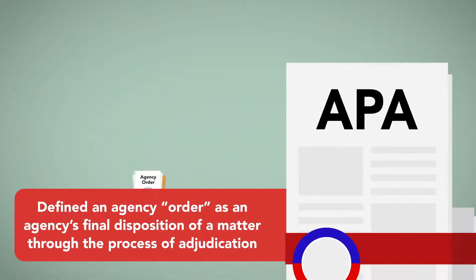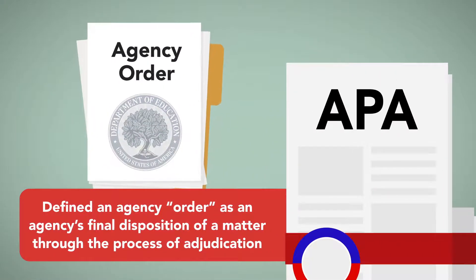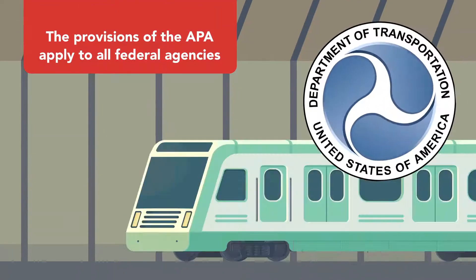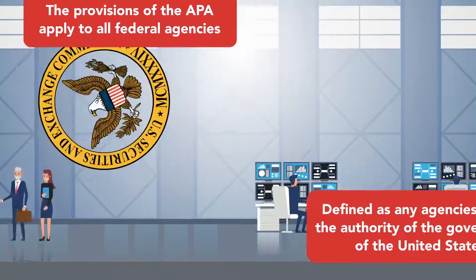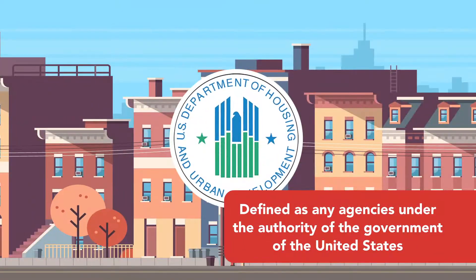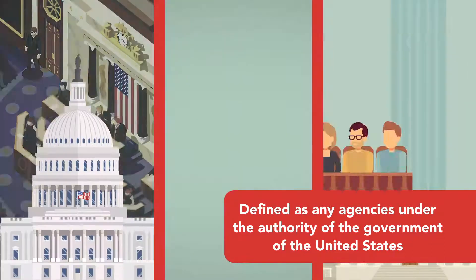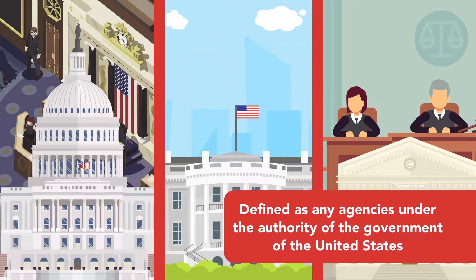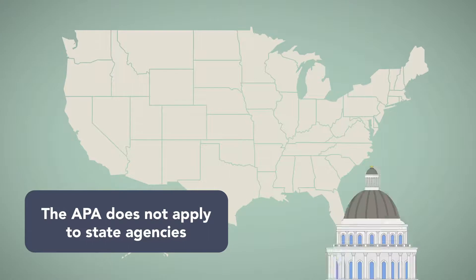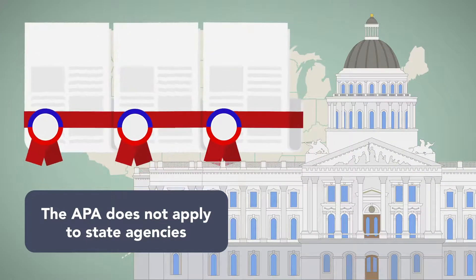The APA also defines an agency order as an agency's final disposition of a matter through the process of adjudication. The provisions of the APA apply to all federal agencies, which are defined as any agencies under the authority of the government of the United States, aside from Congress, the courts, and the President. The APA does not apply to state agencies, though each state has enacted equivalent legislation governing state authorities.